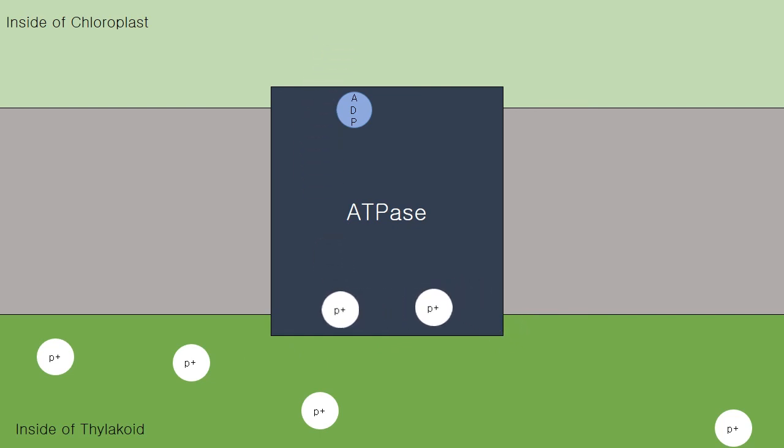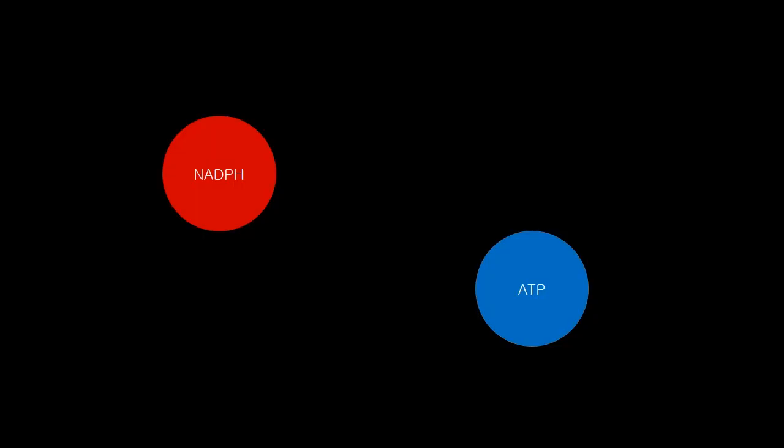When three protons are transferred to the outside of the thylakoid, a phosphate group can be added to ADP to make ATP. ATP drives numerous cellular activities and acts as a molecular currency within cells.